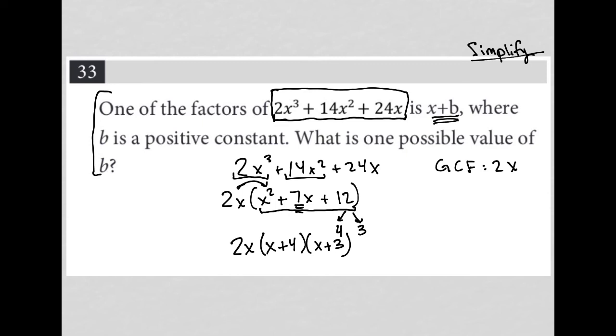Well, I can see that b could be 4, because that's technically an x+b, x+4. Also, b could be 3. b could equal 3.